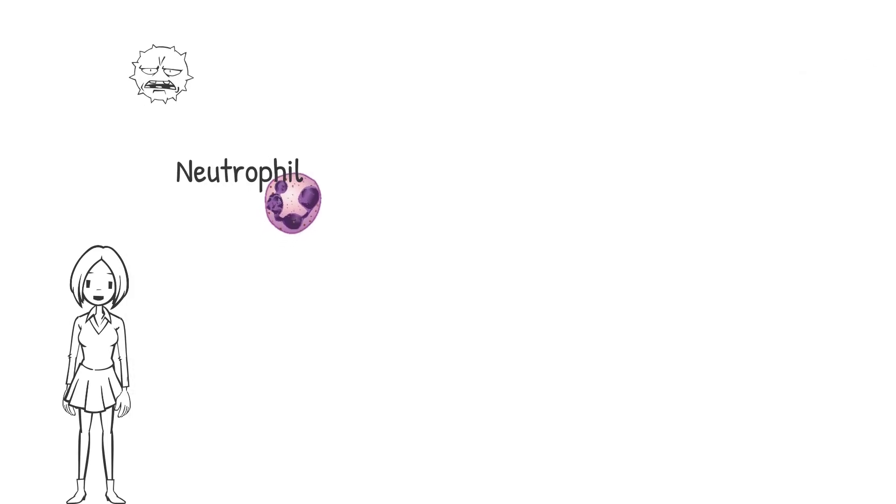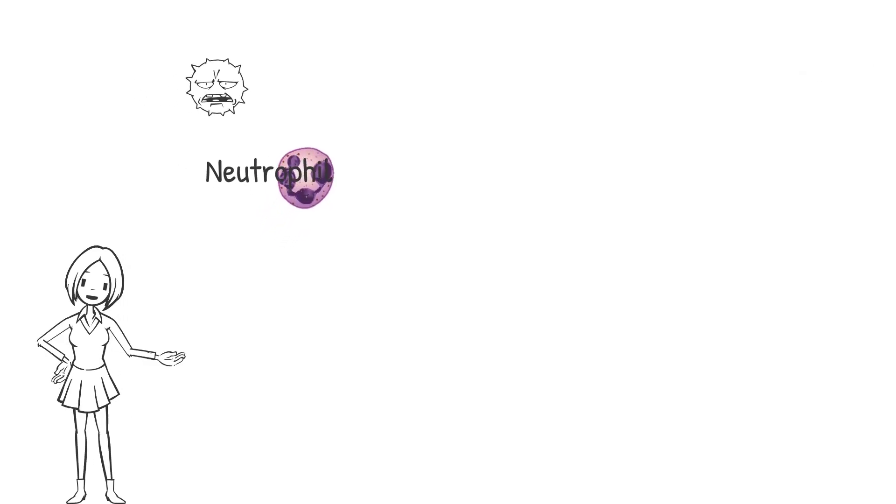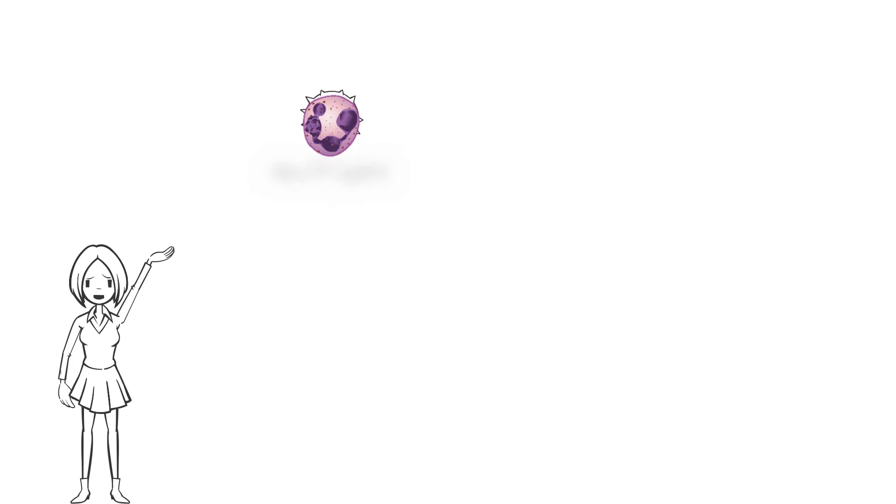If the invader passes the physical barriers, for example when you have a paper cut on your finger, first neutrophils will deal with them. By killing invaders, neutrophils will die and the remains is what we call pus.